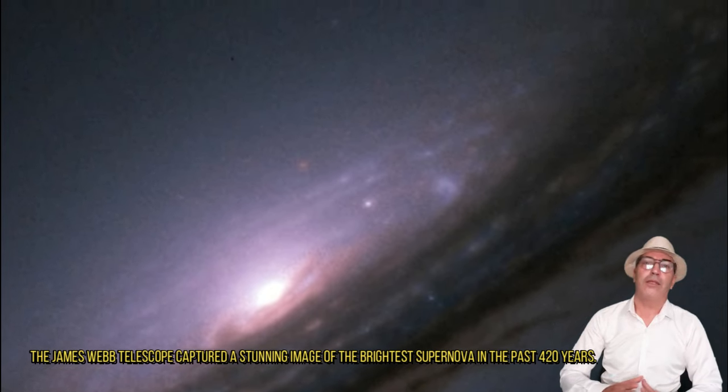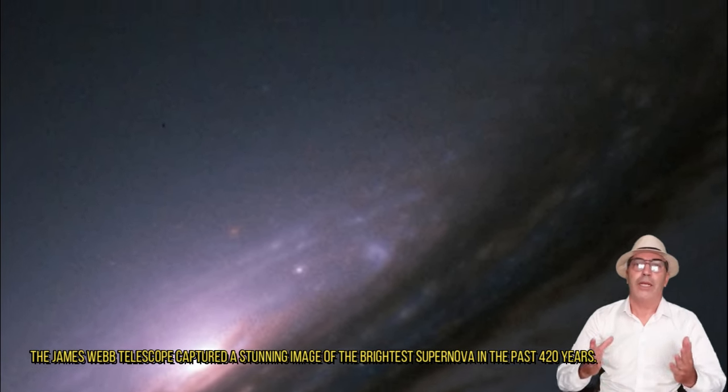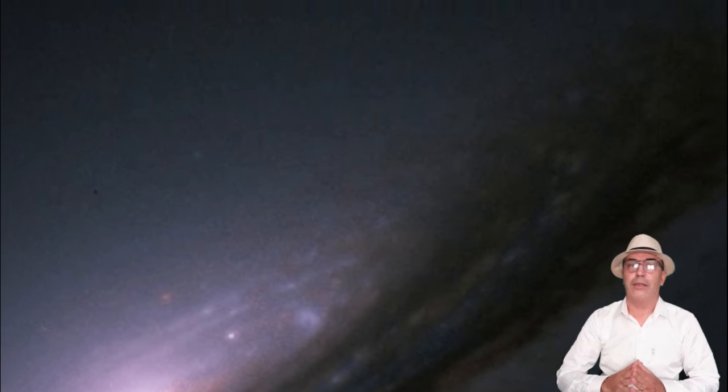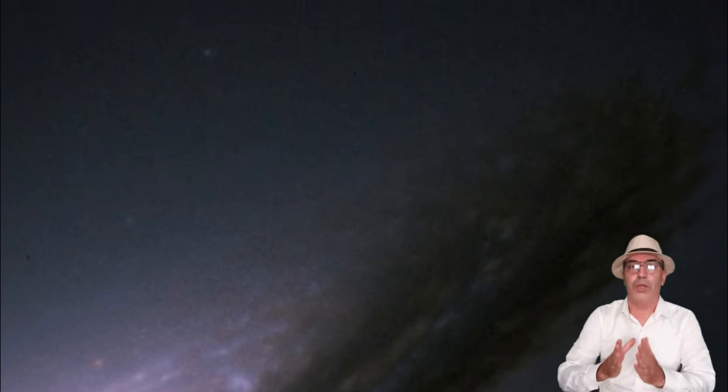Webb reveals new structures within iconic supernova. NASA's James Webb Space Telescope has begun the study of one of the most renowned supernovae, SN 1987a. Located 168,000 light-years away in the Large Magellanic Cloud, SN 1987a has been a target of intense observations at wavelengths ranging from gamma rays to radio for nearly 40 years since its discovery in February of 1987.